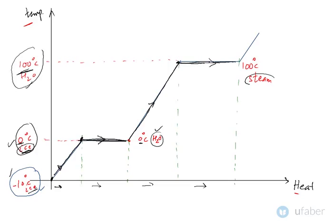Looking at this graph, we need to understand a very important concept: when you give heat, sometimes the temperature changes and sometimes the state or phase changes. So there are two kinds of heat. When there is no change of phase but there is some temperature change, this kind of heat is called sensible heat. When there is no temperature change but there is some state change, this kind of heat is called latent heat.